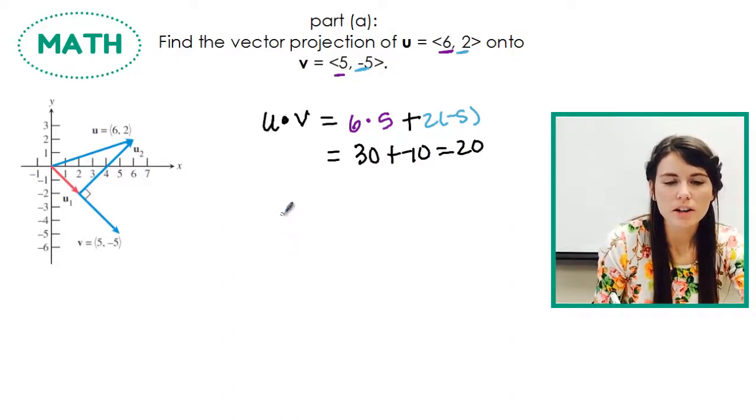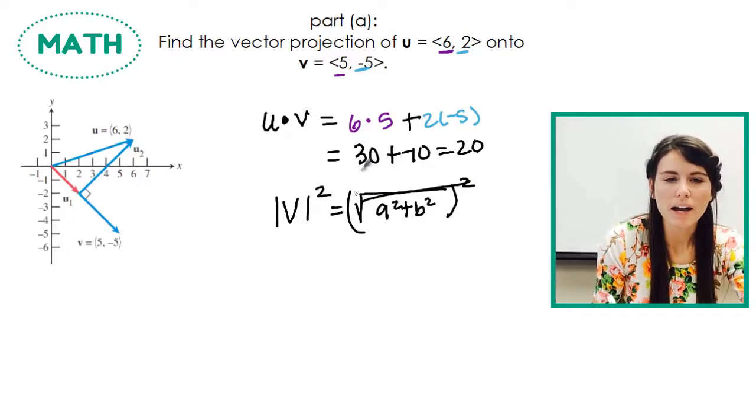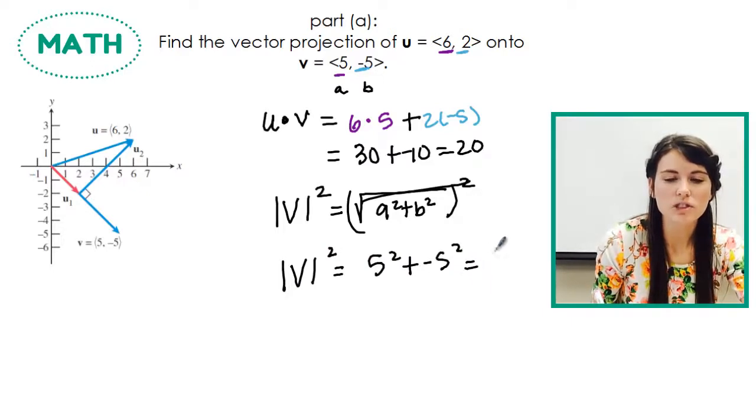Then the other part of the formula said I need to know the magnitude of v squared. So remember the magnitude formula is a squared plus b squared. So if I'm squaring that, that's pretty easy. That just means I'm not going to square root it. So my a value for v is 5. My b value is negative 5. So the magnitude of v squared is going to be equal to 5 squared plus negative 5 squared, which is 50.